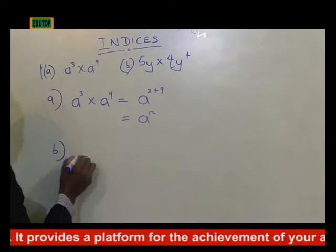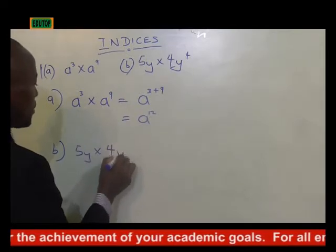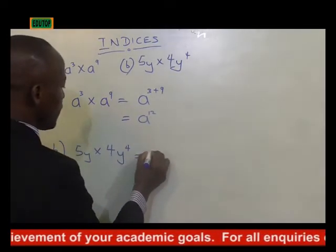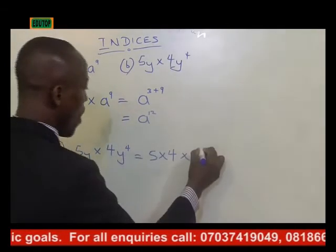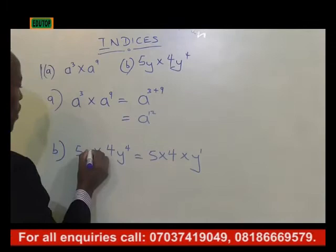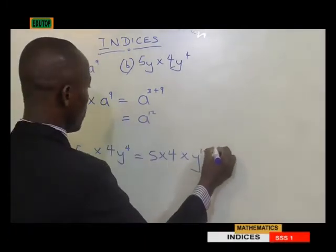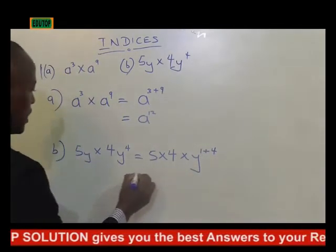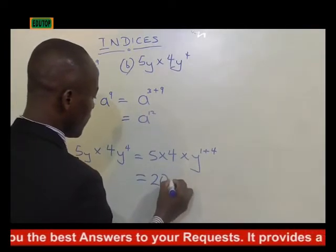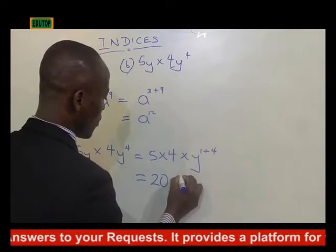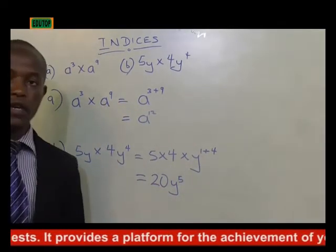For part b, we have 5y times 4y raised to power 4. That would be 5 times 4 times y raised to power 1, times y raised to power 4. Since we are multiplying, we add the powers: 5 times 4 is 20, and 1 plus 4 is 5, giving us 20y raised to power 5, which is our final answer for the first law of indices.